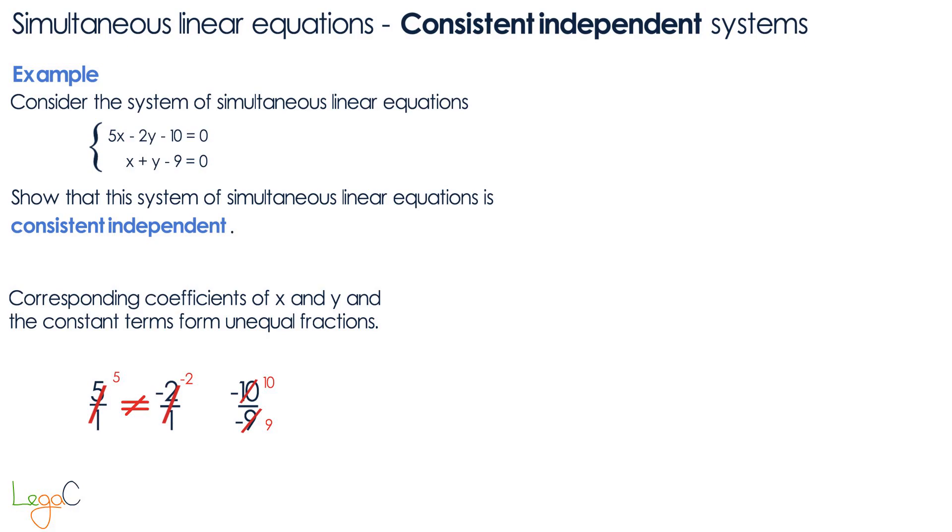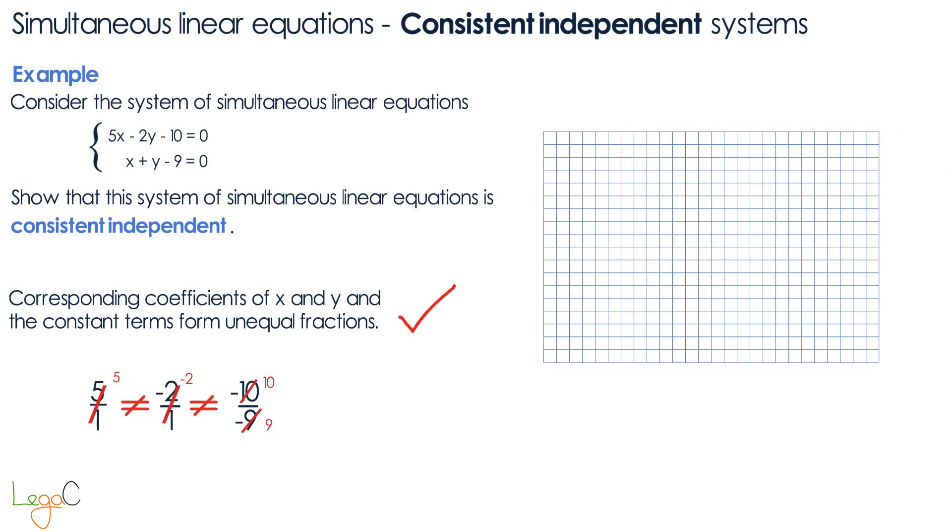It is obvious that the three fractions are not equal so this condition is true which means that the system is consistent independent. Now let's plot these two equations on a graph and see what they look like.